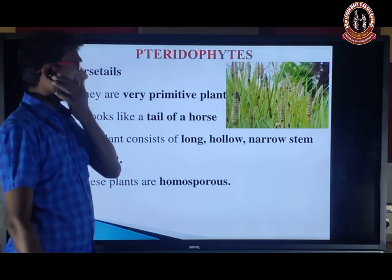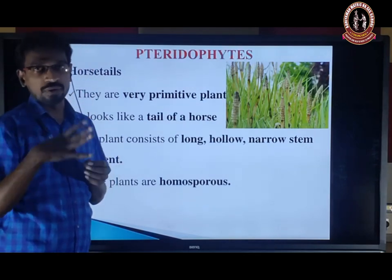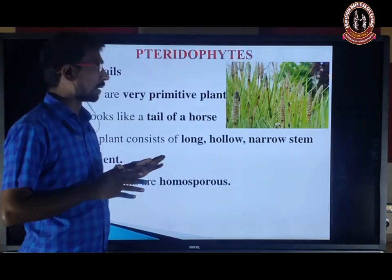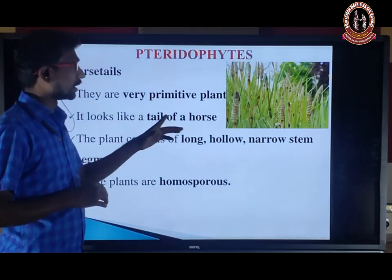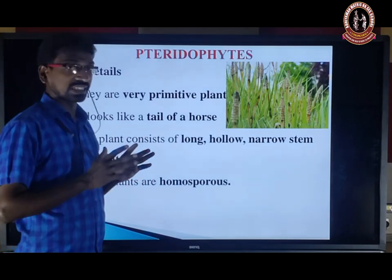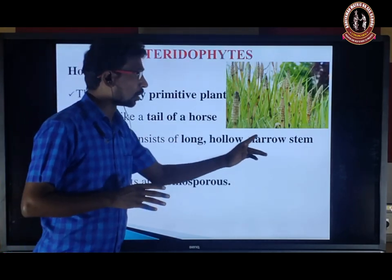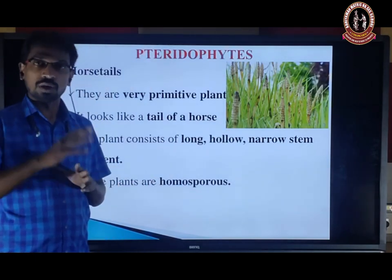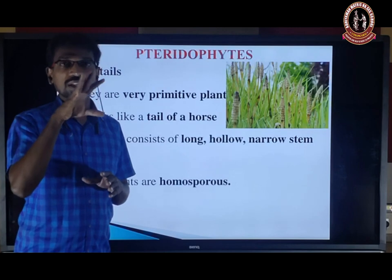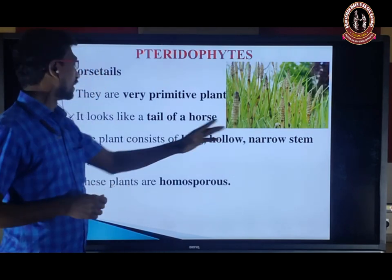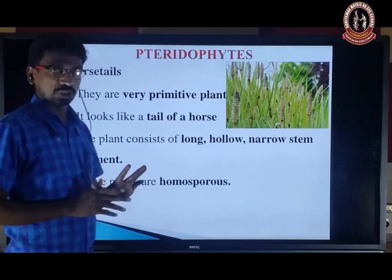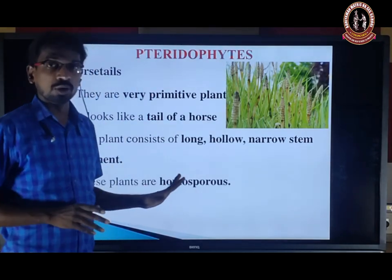Next is the horsetail type. This plant looks like the tail of a horse, which is why it is called horsetail. They are very primitive plants. The plant consists of a long, hollow, narrow stem — a long stem with hollow space (empty space) present at the center of the stem, and narrow stem segments. These plants are also homosporous.